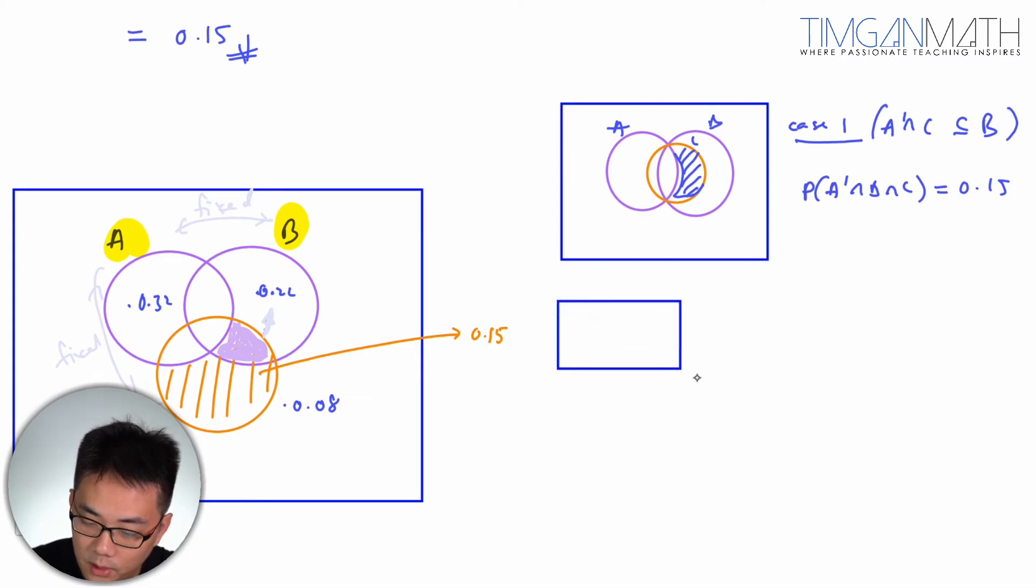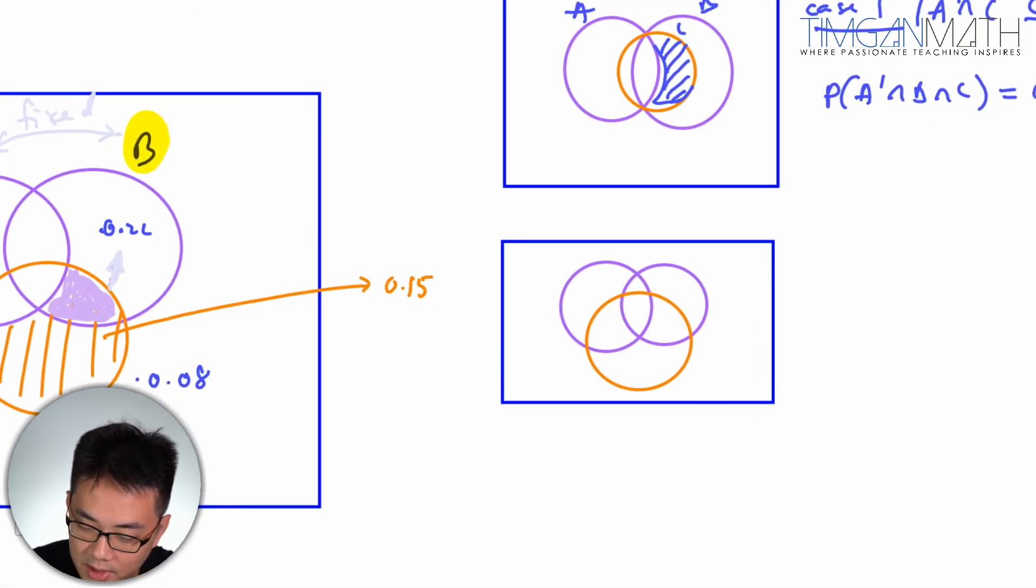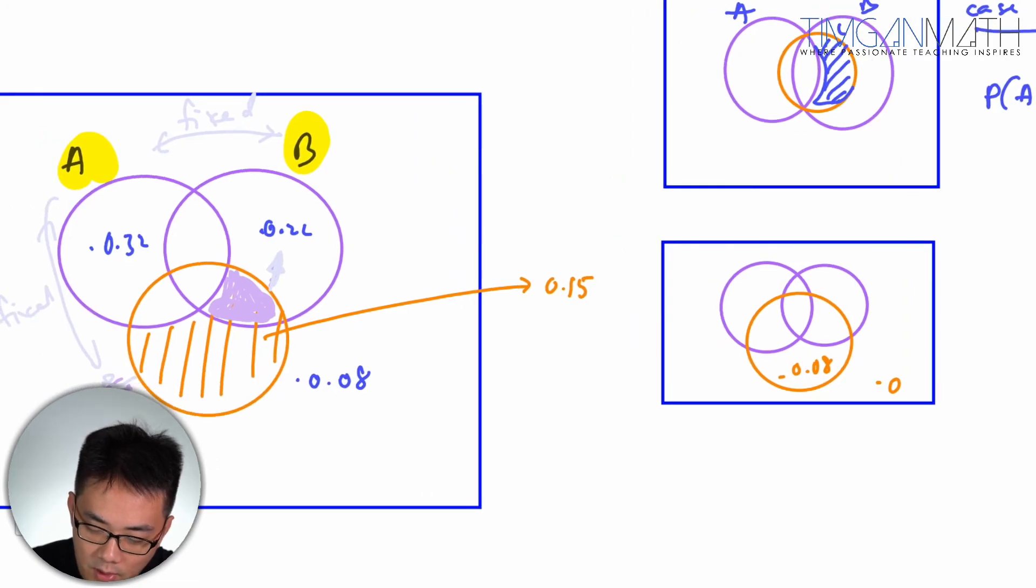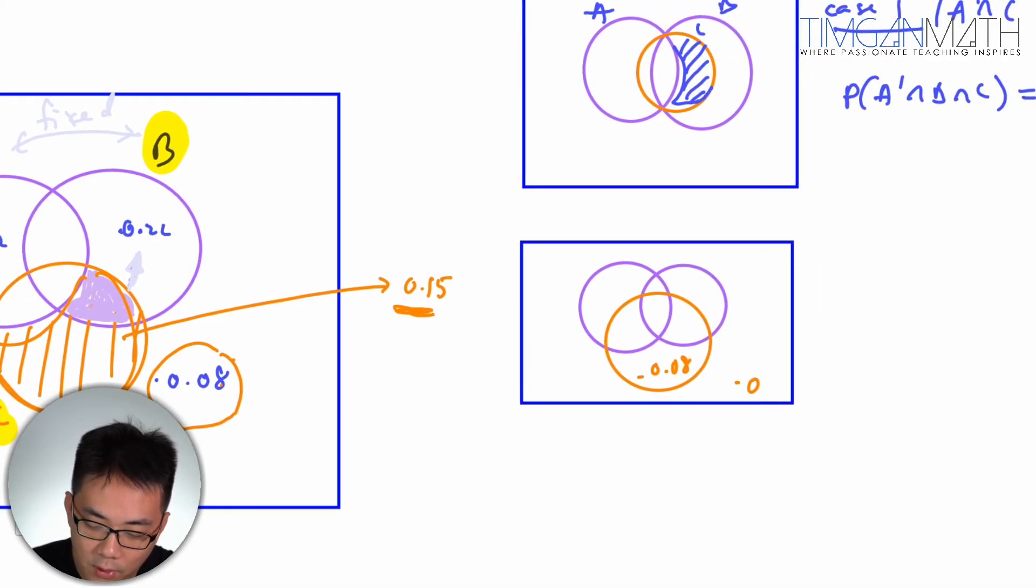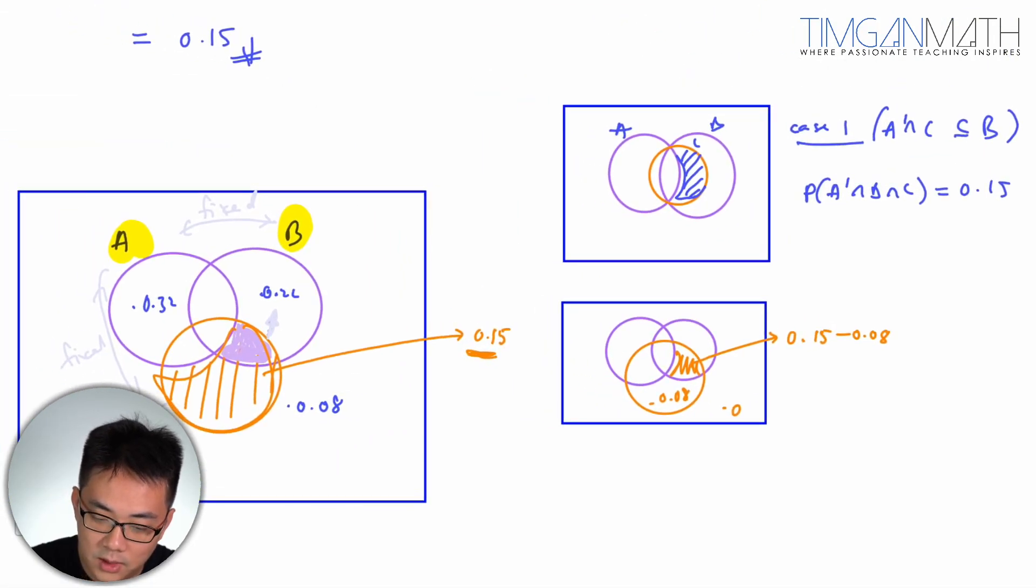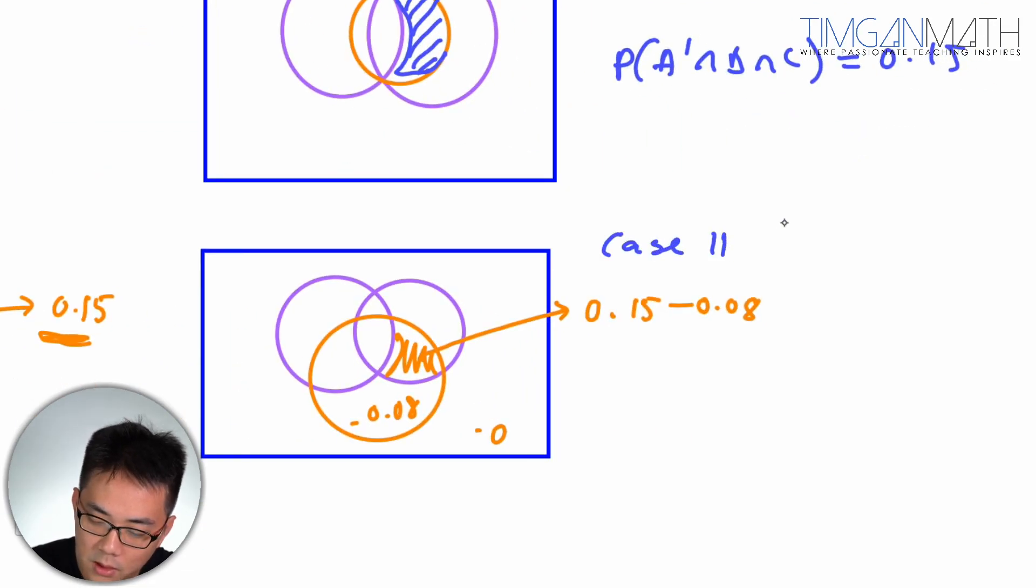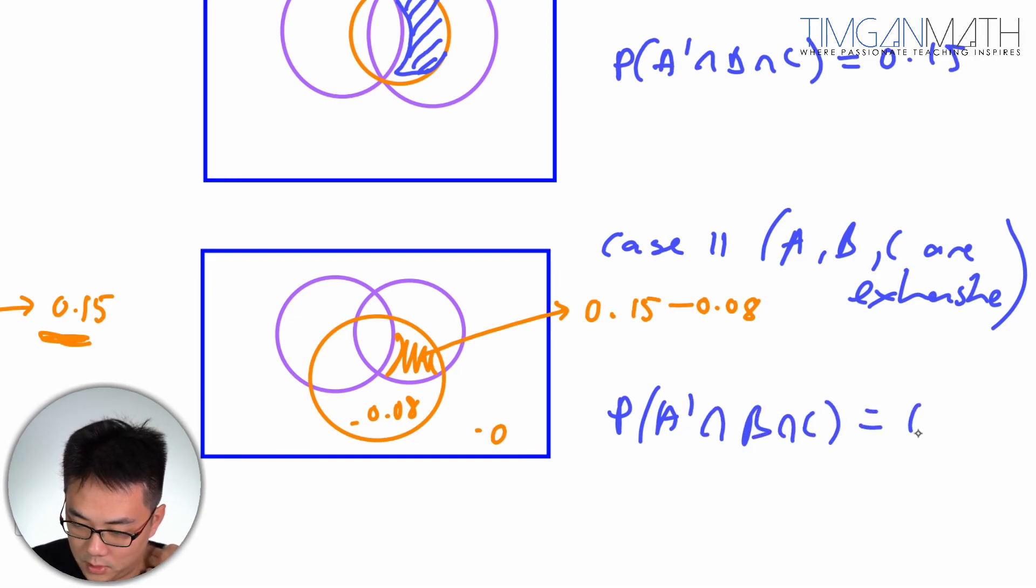Case number two is when you think about it, what we need is actually A and B and we need them to be exhaustive. So we need to exhaust every single resource we can. So outside is zero. So here will be 0.08. But because outside is 0.08, and this whole crescent here is 0.15, you can only accommodate 0.08. You can't move all the way out. You can only contain 0.08 here, so this would be 0.15 minus 0.08. So this is case two when A, B, and C are exhaustive. This case here, P(A prime intersect B intersect C) would be 0.15 minus 0.08, which is actually 0.07.